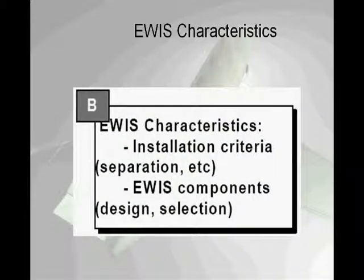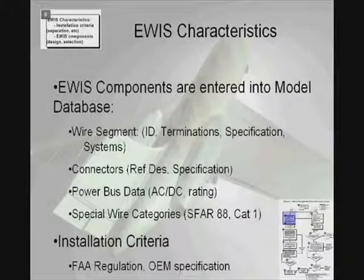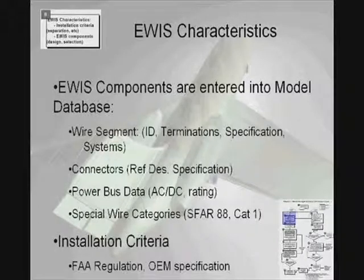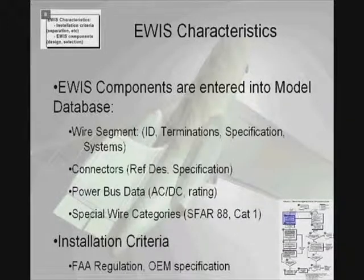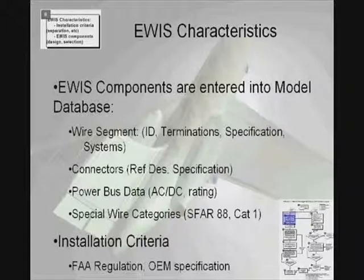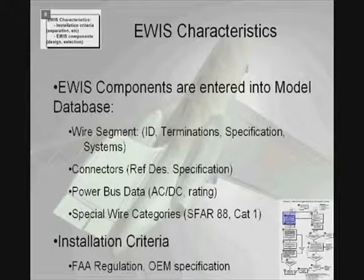Some of the components that are brought into the EWIS model include wire segment data, including the termination points, the type of specification that the wire is, and the particular system that the wire is a part of — whether the wire is associated with the braking system, the FADEC, or environmental controls. Other EWIS components imported include connector information, the refdes, and specification of the connectors. The specification information provides the means for the EWIS RAT to generate bent pin analyses, reports, and information such as the power bus data.